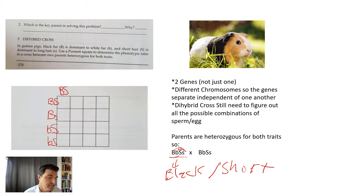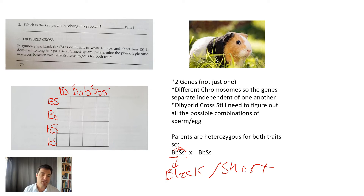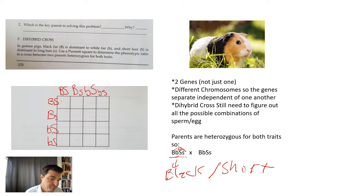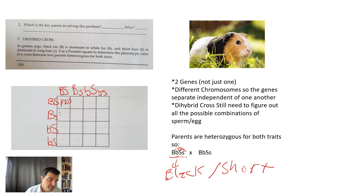The possible gametes are: big B big S, big B little s, little b big S, or little b little s. Then you ask yourself: if this sperm fertilized that egg, what would the resulting baby be? For example, big B big S sperm fertilizing big B big S egg gives you big B big B big S big S. Big B big S sperm fertilizing big B little s egg gives you big B big B big S little s.